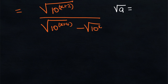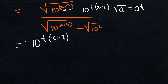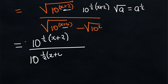To get rid of the square roots, we use the fact that the square root of a is the same as a raised to the power of one half. So instead of square roots, we put an exponent of one half. This gives us 10 to the power of one half multiplied by (x + 2), divided by 10 to the power of one half multiplied by (x + 4), minus 10 to the power of one half multiplied by x.